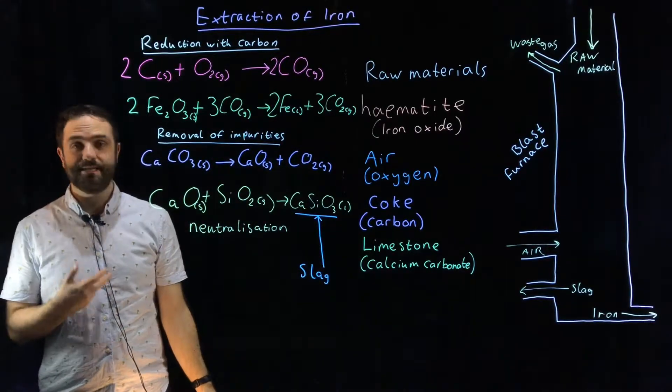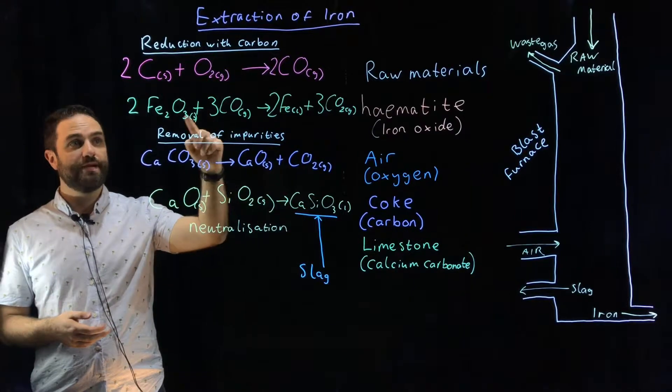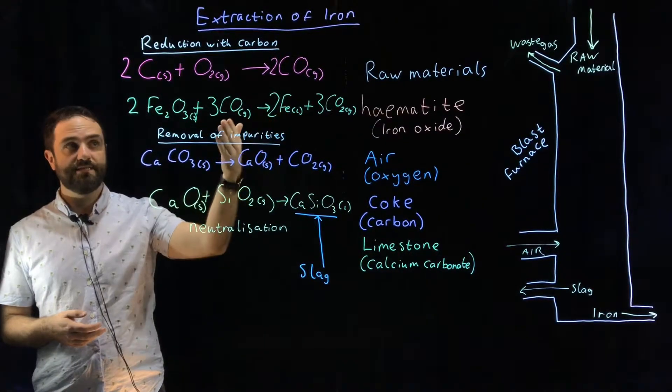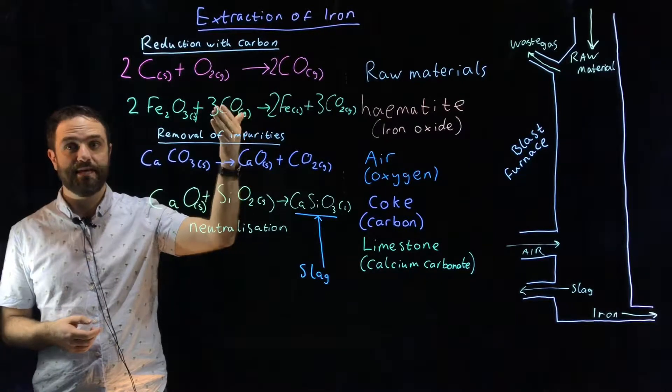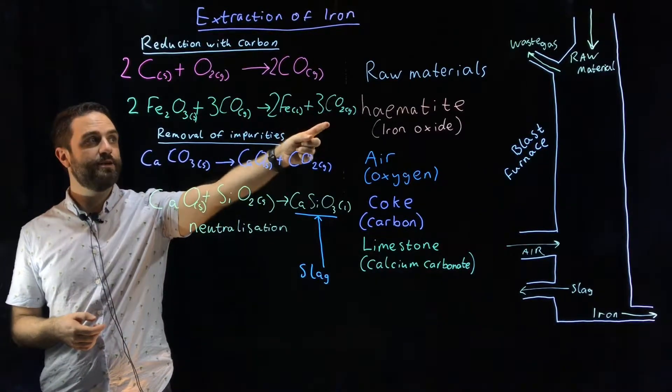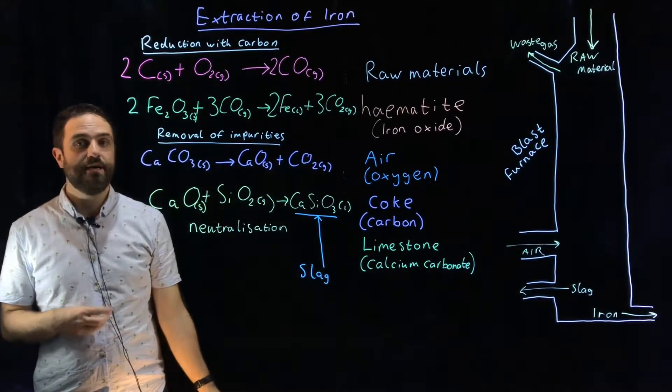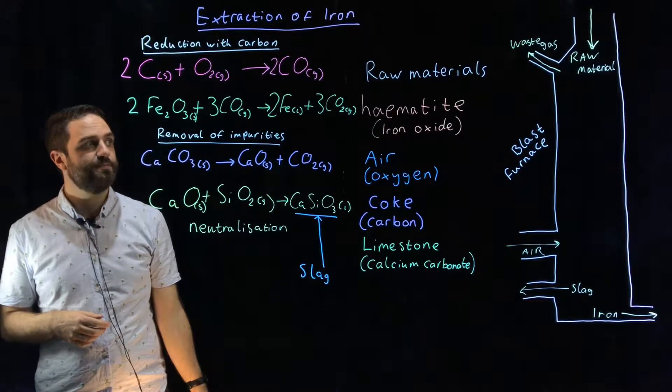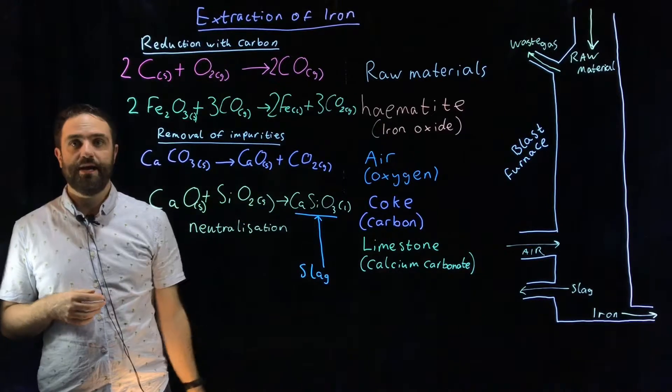The carbon monoxide at these high temperatures is then going to react with our iron oxide. In order to make iron, it's displacing it, it's reducing it, taking away the oxygen and we end up with carbon dioxide which is one of our waste gases. Not a very environmentally friendly process this. So now we've got our iron. Excellent.